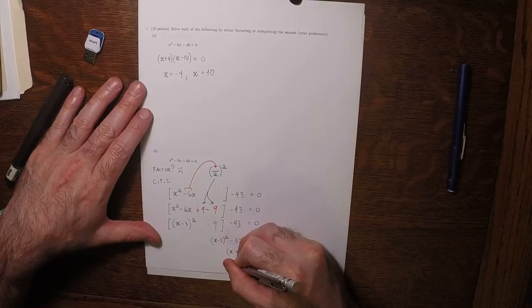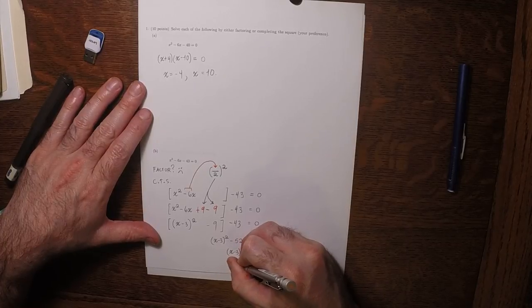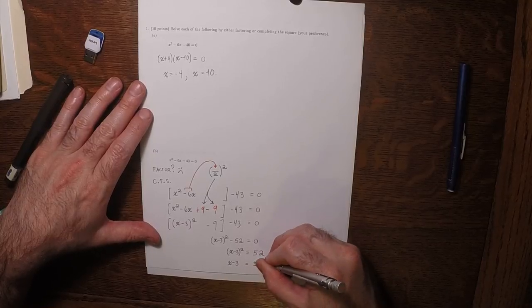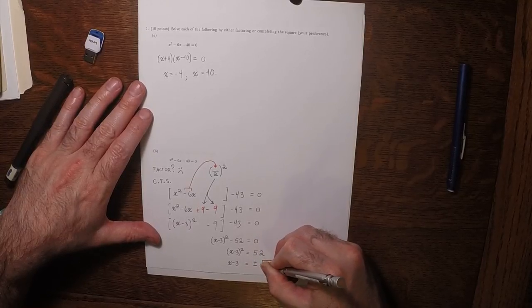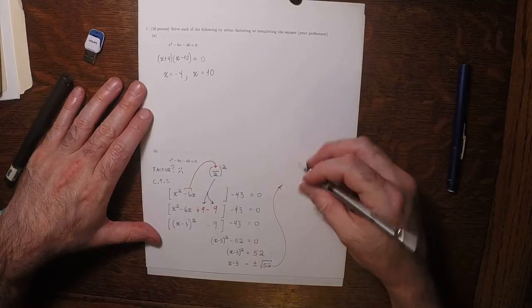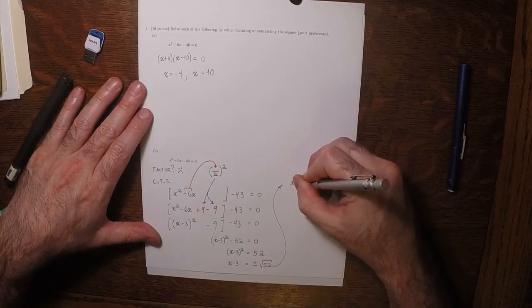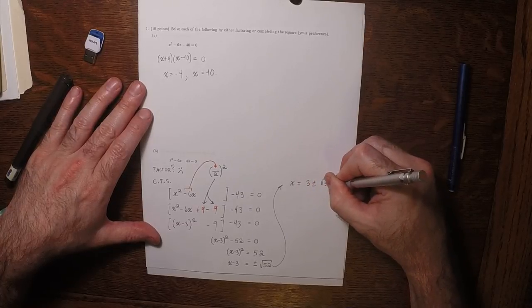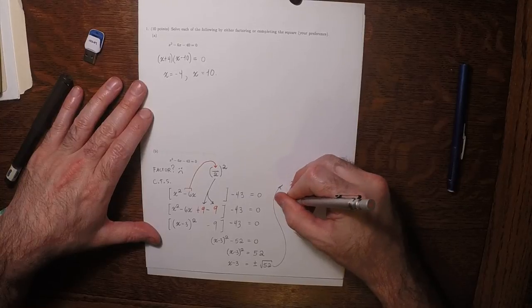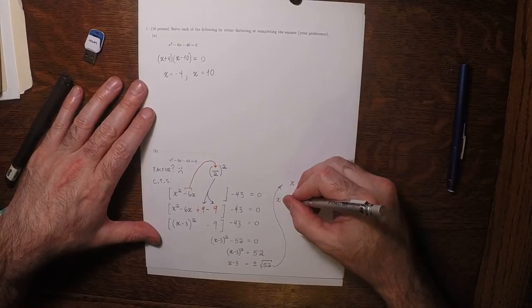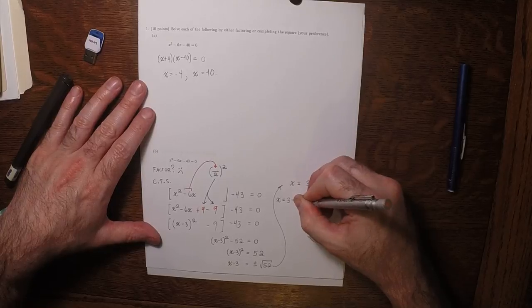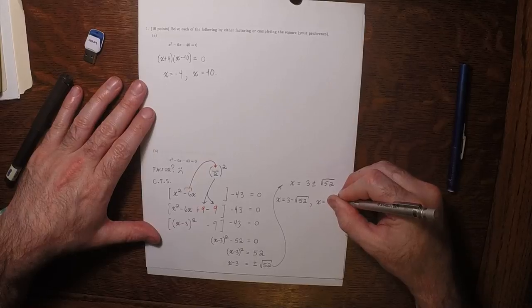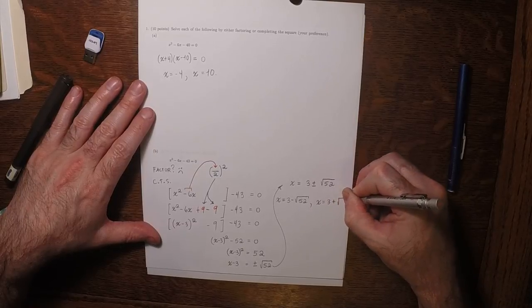x minus 3 should be either positive or negative square root 52. So the answers are 3 plus or minus square root 52, which you could write as x is 3 minus the square root of 52, or x is 3 plus the square root of 52.